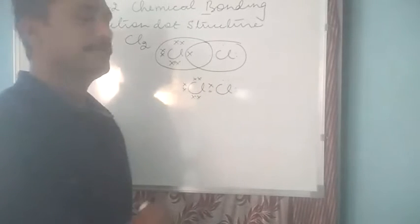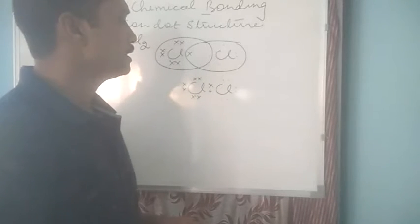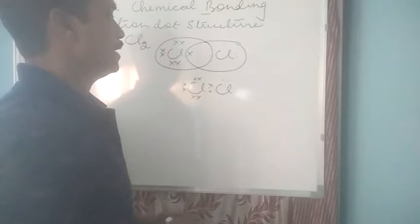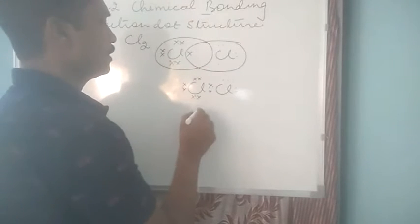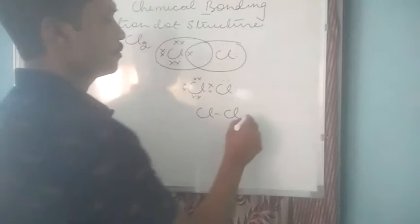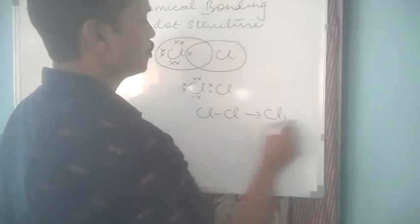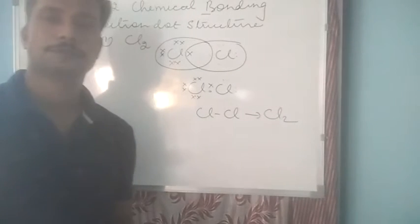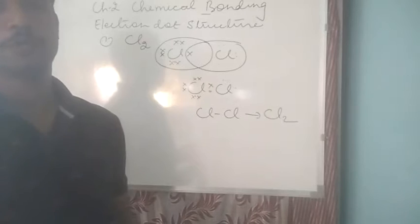Remaining electrons of each chlorine atom can be shown as it is. And it is these 2 shared pair of electrons that will form a covalent bond between chlorine atoms forming a chlorine molecule. So this we have for the chlorine molecule.